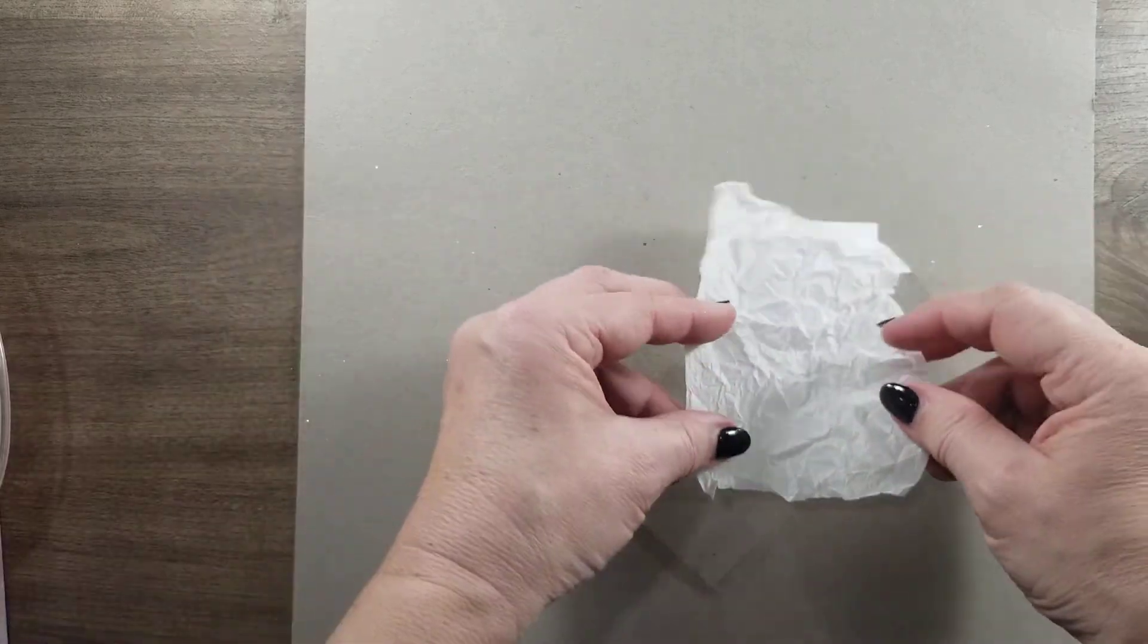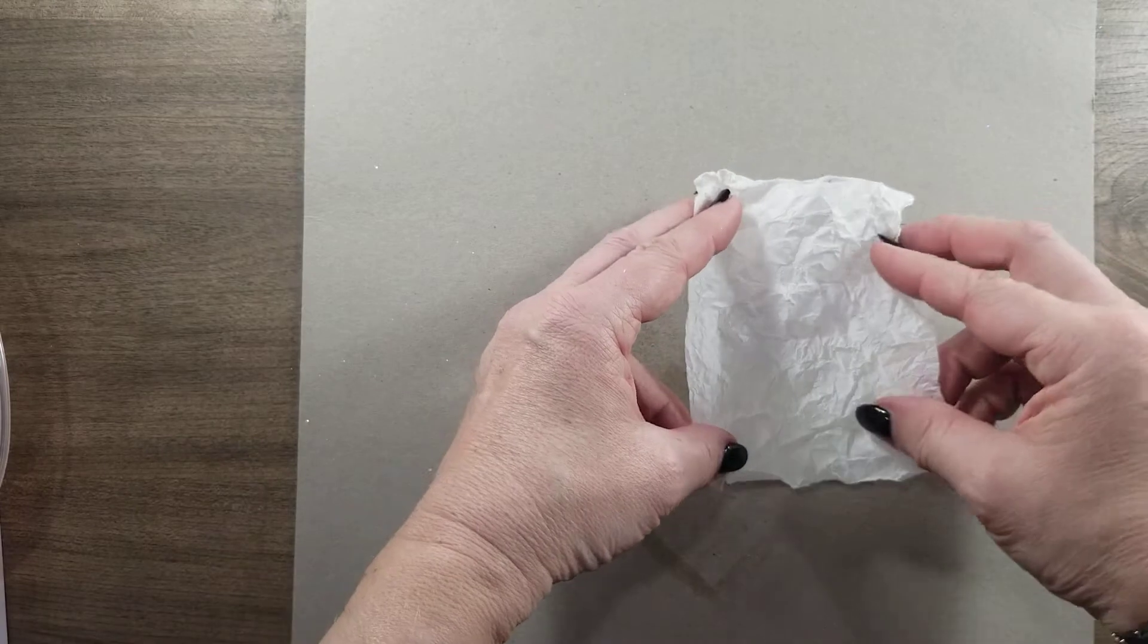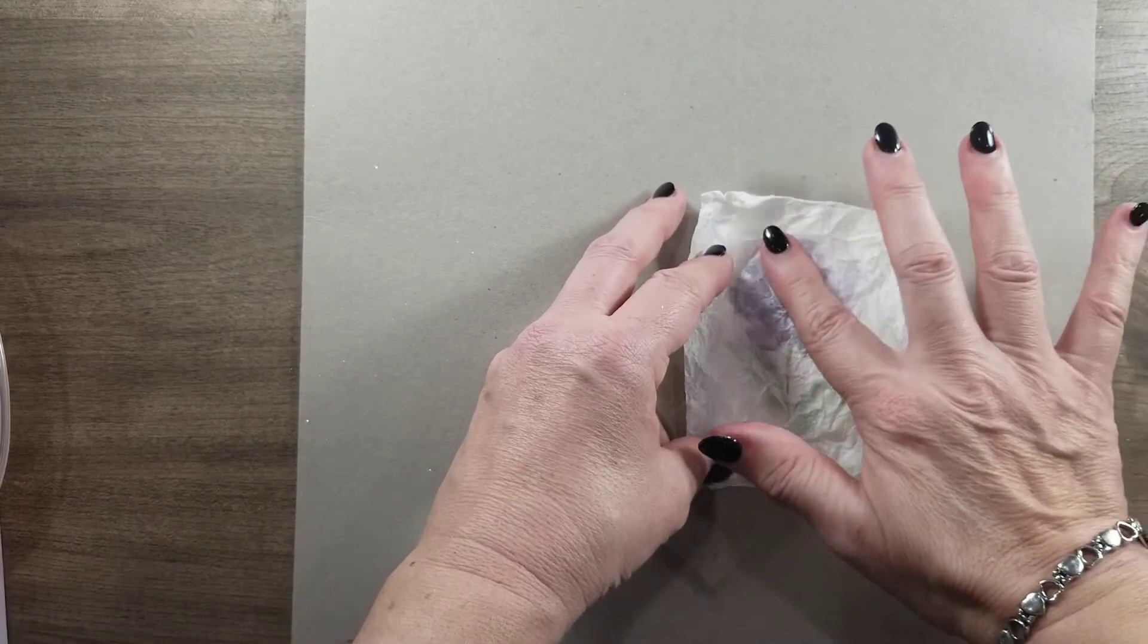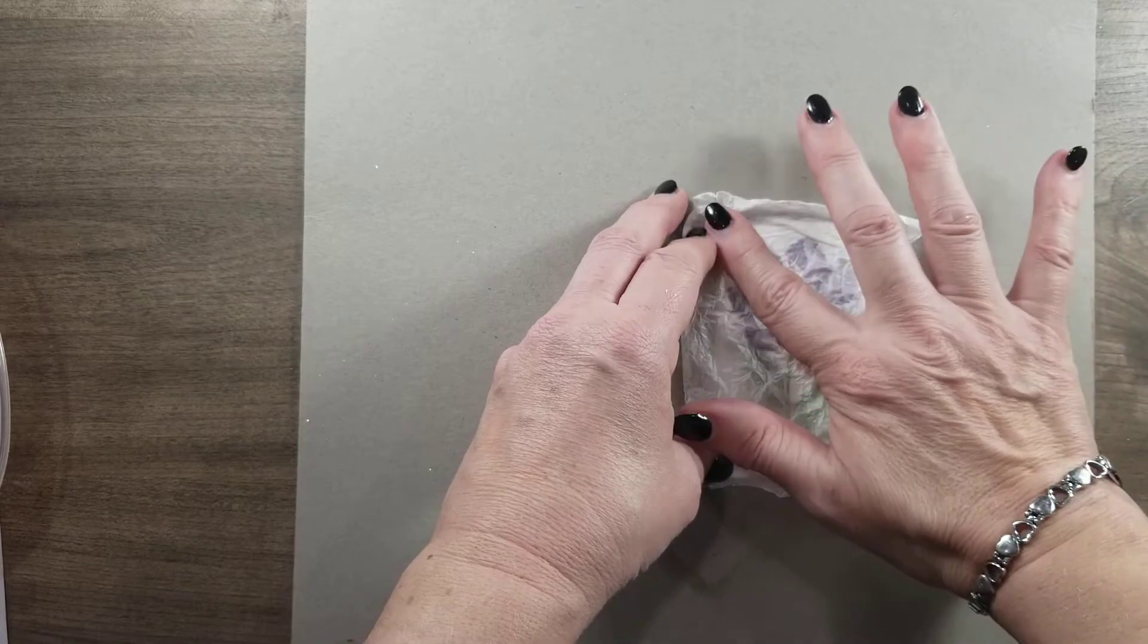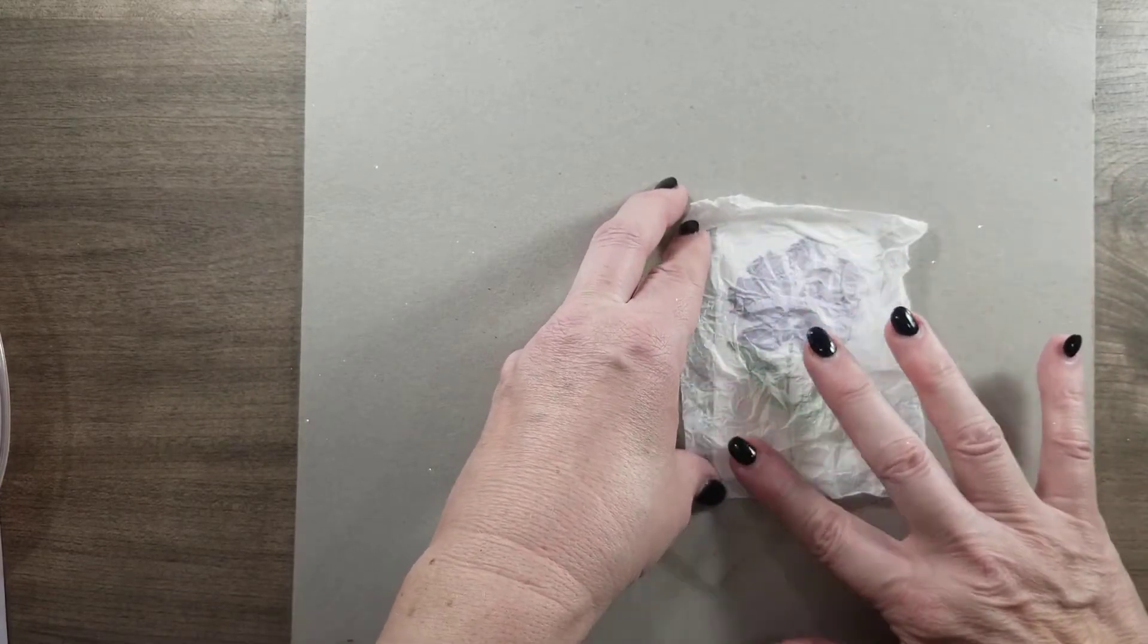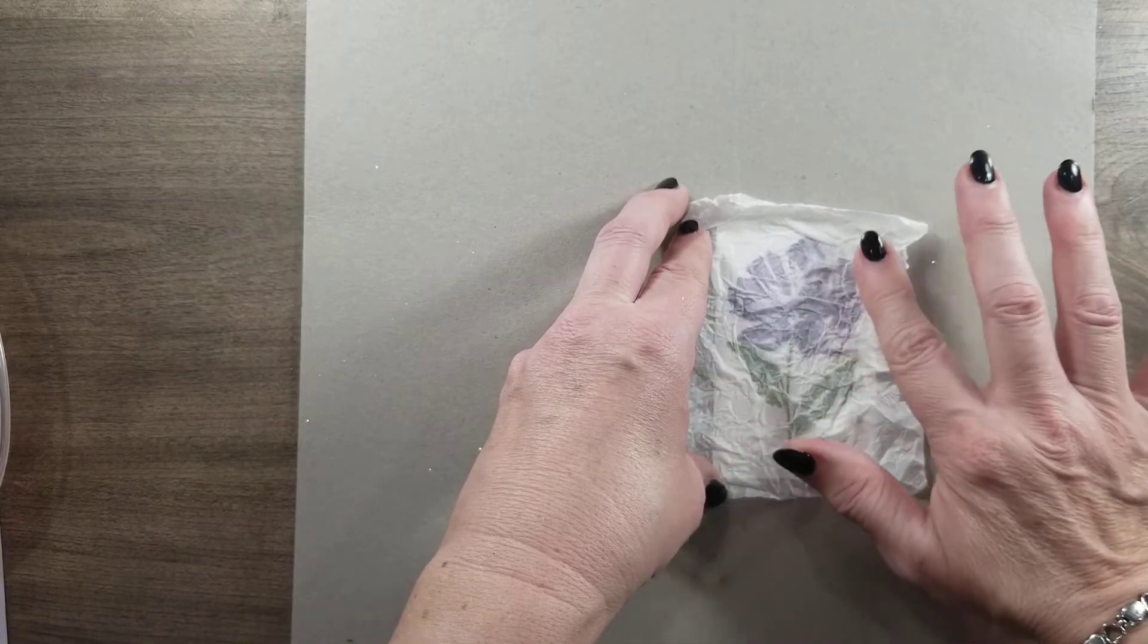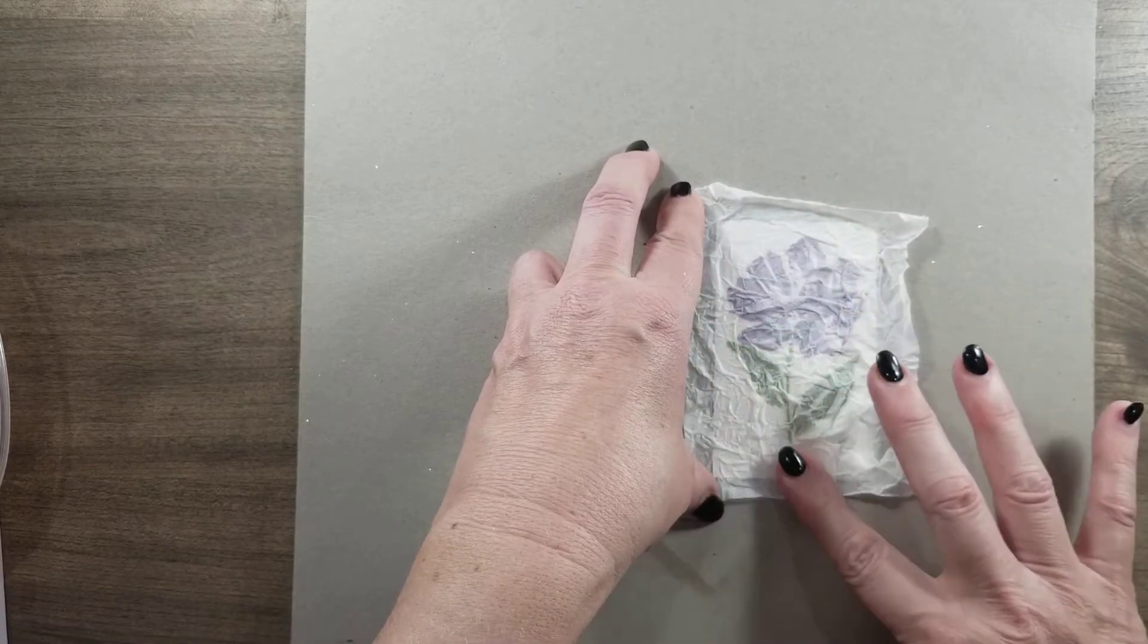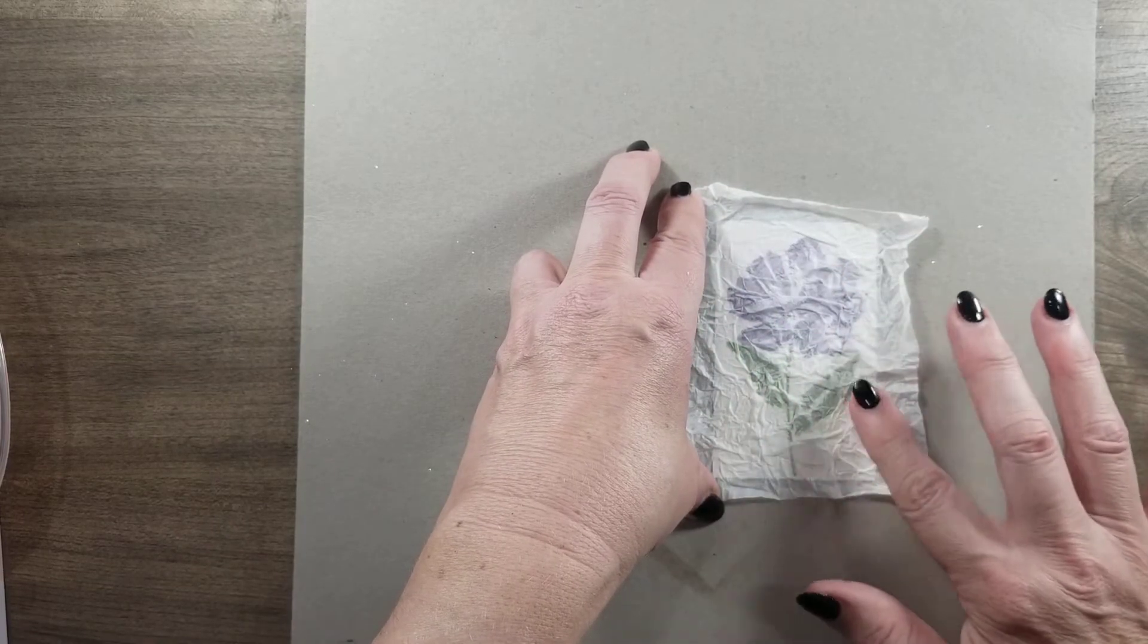Now I'm just going to take my tissue paper. I'm going to kind of tap it down. I'm not going to smooth it out with my finger, just tap it so it leaves some of the wrinkles.